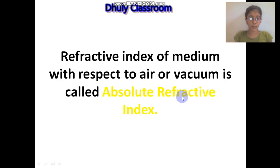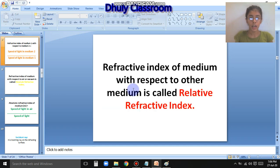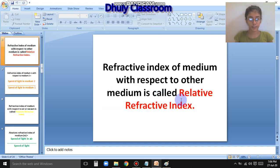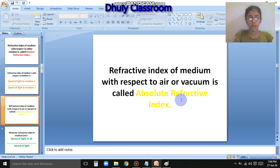Next is our absolute refractive index. Its definition: the refractive index of a medium with respect to air or vacuum. In relative refractive index, it was the refractive index between medium 1 and medium 2. Absolute refractive index is when we take the ratio of one medium with respect to air or vacuum.